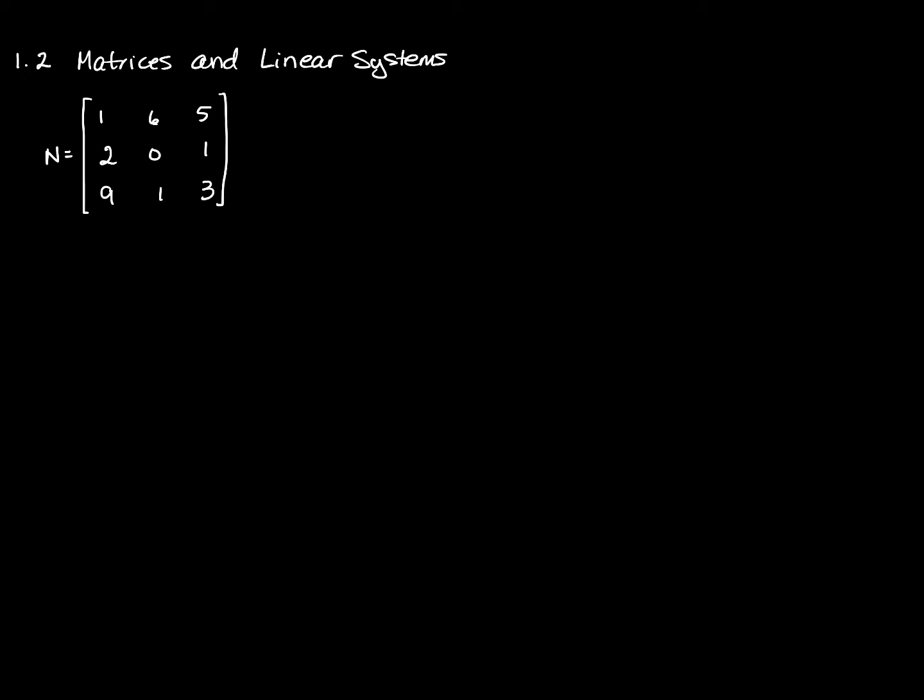The trace of a matrix is what you get when you add up the entries in the main diagonal. So here, you write TR(N), because this is matrix N. The trace of N is going to be 1 plus 0 plus 3. So in this case, the trace of N is 4.